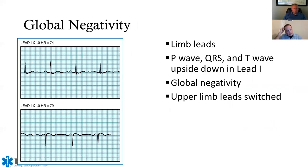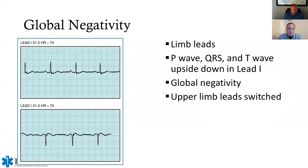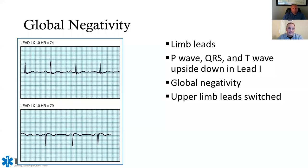Global negativity is a check for proper lead placement. If you look at the 12-lead and leads I, II, and III are all deflected downward, your upper limb leads are probably switched — right arm and left arm reversed. Specifically, if the QRS complex in lead I is deflected negatively, you likely have your left and right arm leads switched.